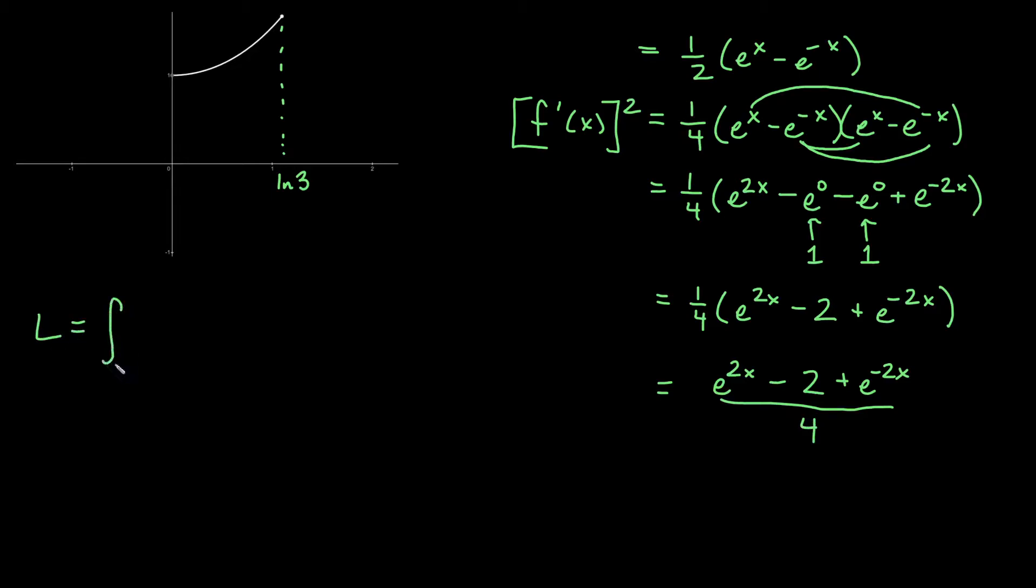So now when I integrate and I do a to b and I have the square root of 1 plus f prime squared. So something is going to happen quite remarkably. So we'll have integral from 0 to ln 3 and I will have 1 plus whatever I have here.